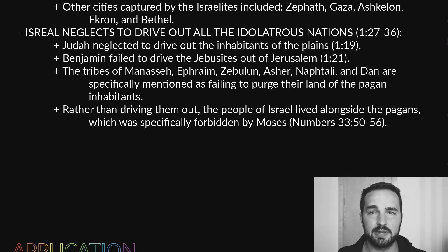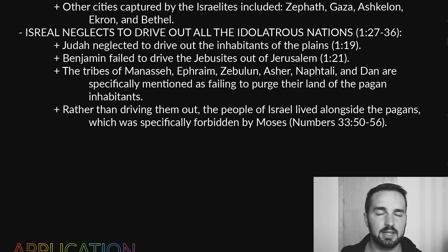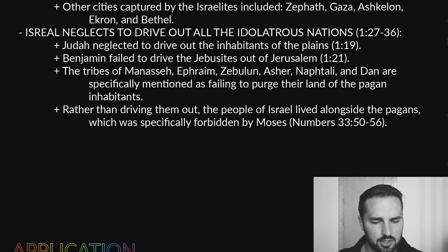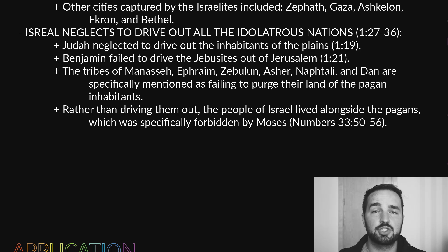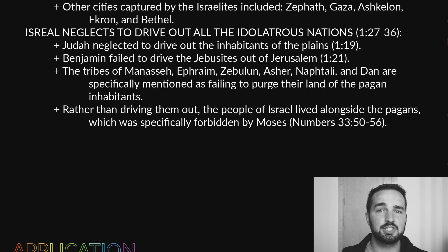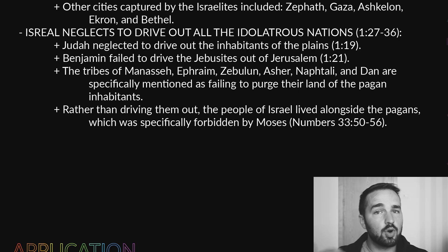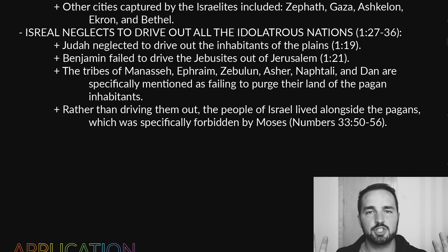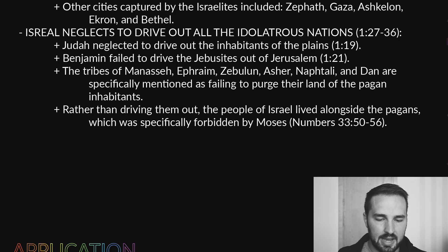In the second half of this chapter, we have the problem introduced that's going to plague Israel for centuries to come — Israel neglected to drive out the idolatrous nations living in the promised land. Judah neglected to drive out the inhabitants of the plains; Benjamin failed to drive out the Jebusites in Jerusalem. The tribes of Manasseh, Ephraim, Zebulun, Asher, Naphtali, and Dan are specifically mentioned as having failed to purge their lands of the pagans. Rather than driving these nations out, Israel was content living alongside them — which was specifically forbidden by Moses; see Numbers chapter 33, verses 50 through 56.